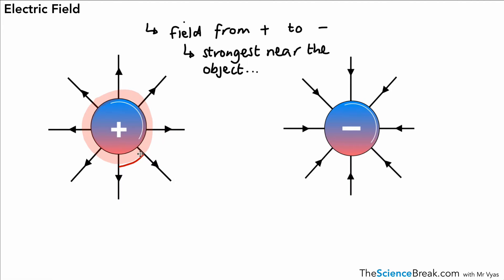And we could show that, or these lines show that, because the field lines, electric field lines, are much closer nearer the object. So the field lines are closer - that indicates a stronger electric field near that object.